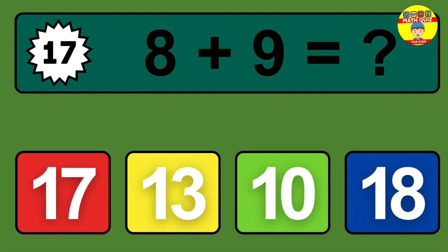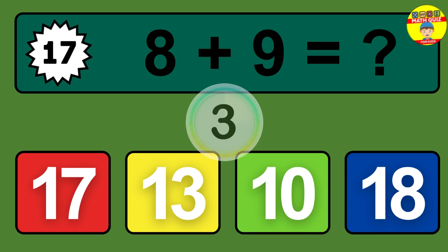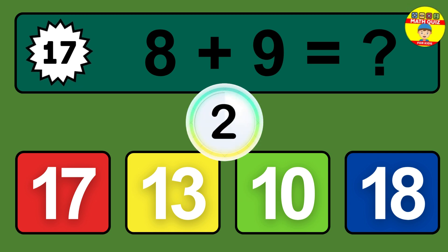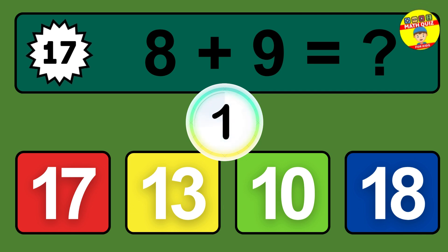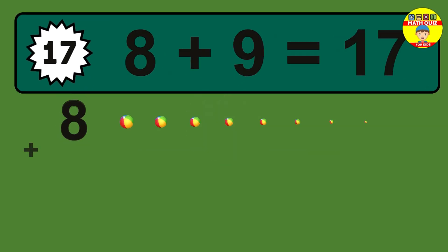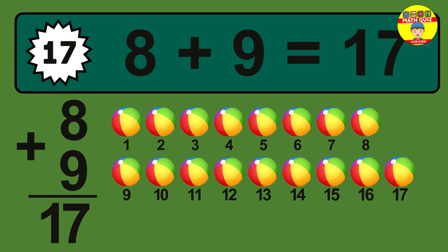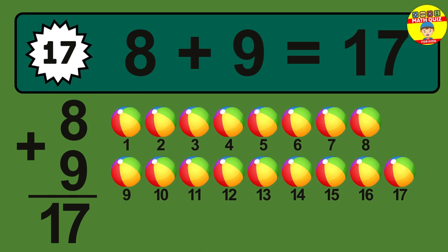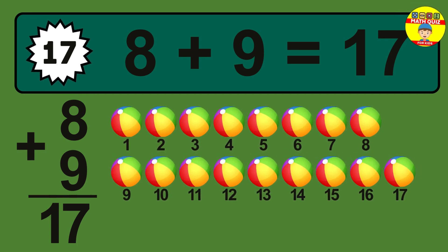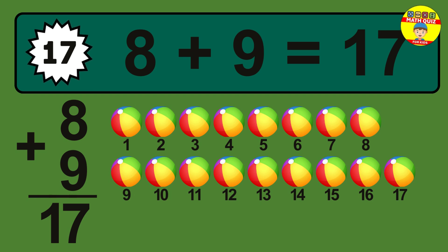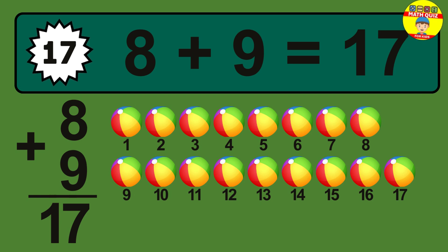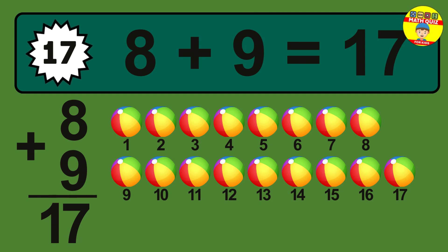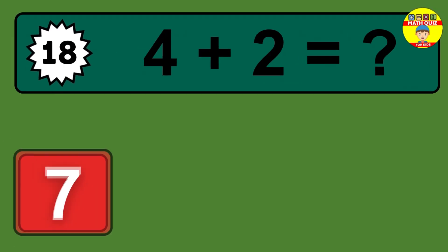Question 17. 8 plus 9 equals what? The answer is 8 plus 9 is 17. Let's count it: 1, 2, 3, 4, 5, 6, 7, 8, 9, 10, 11, 12, 13, 14, 15, 16, 17.